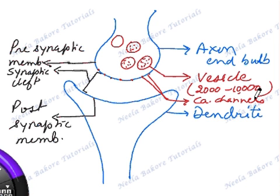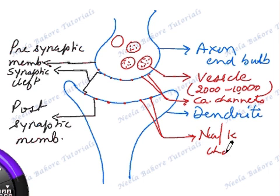Similarly, on the wall of dendrites, that is the postsynaptic membrane, there are channels again, but these channels are meant for exchange of sodium and potassium. So these are called sodium-potassium channels.